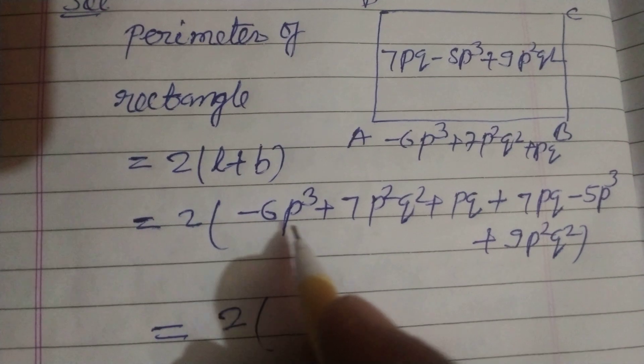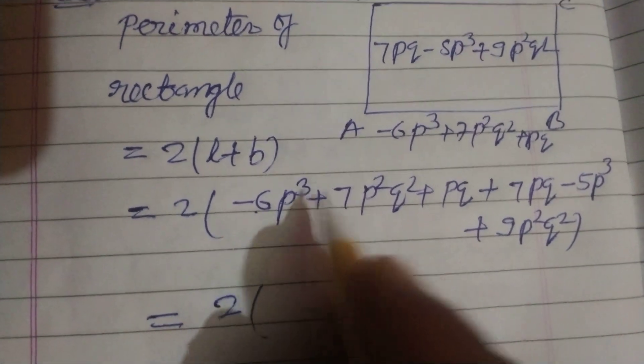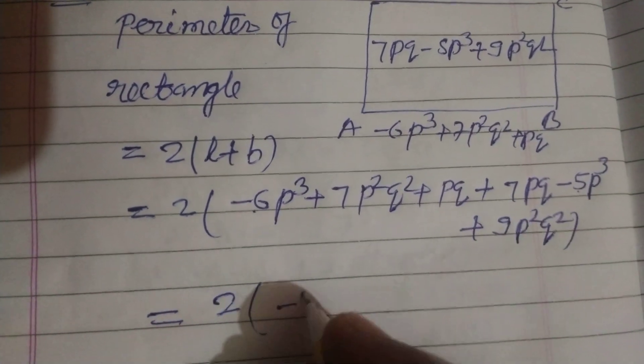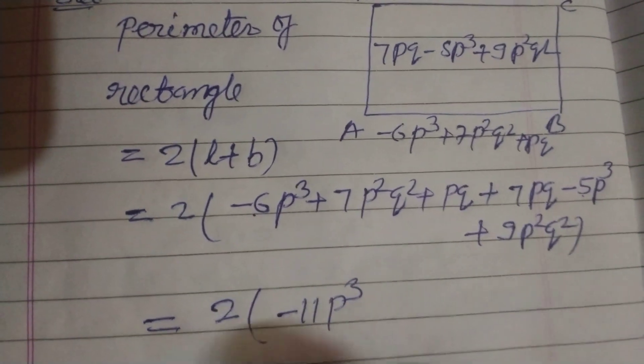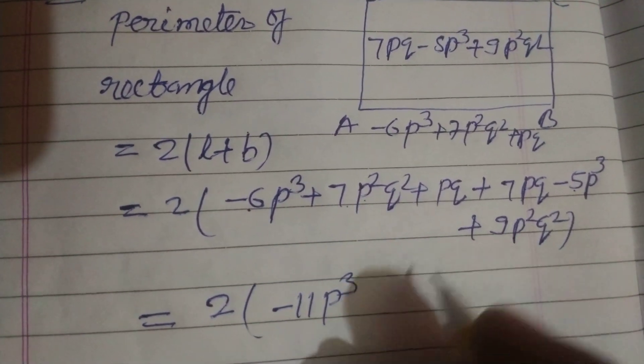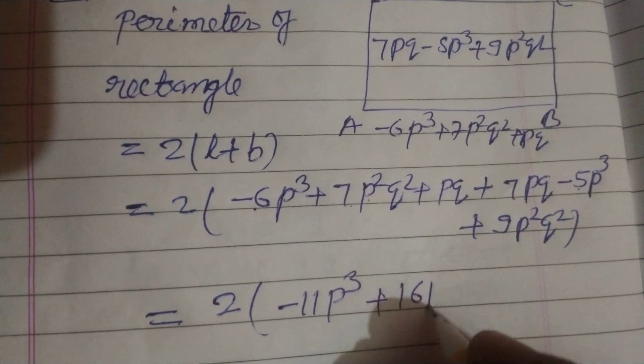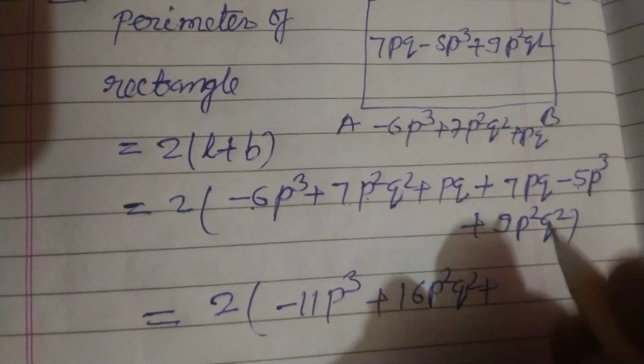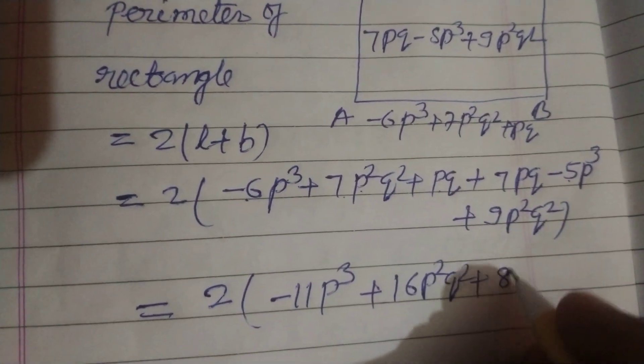So 2 times: here -6PQ - 5PQ gives -11PQ, 7P²Q² and 9P²Q² gives 16P²Q², and -5P³ + PQ gives 8PQ.